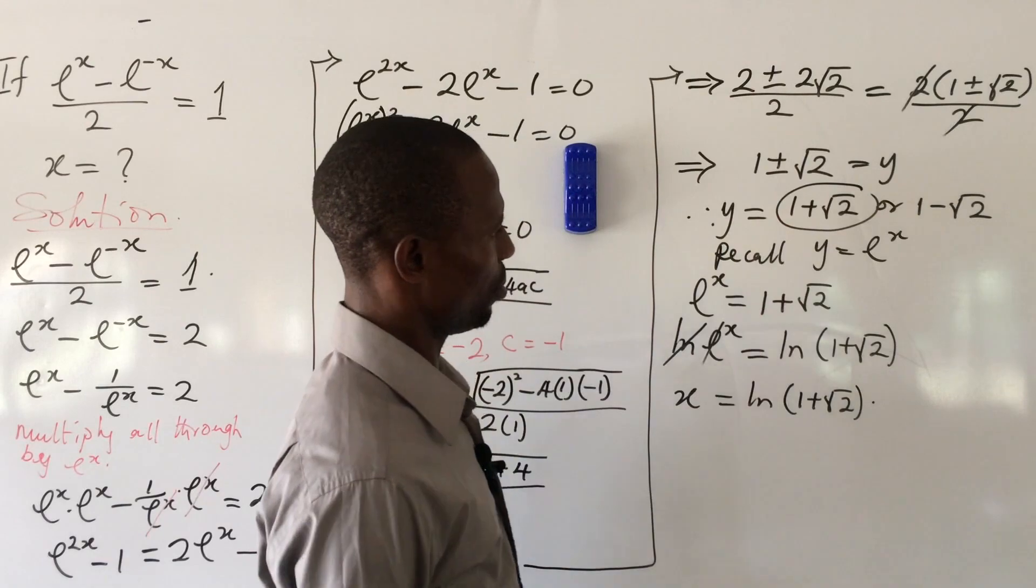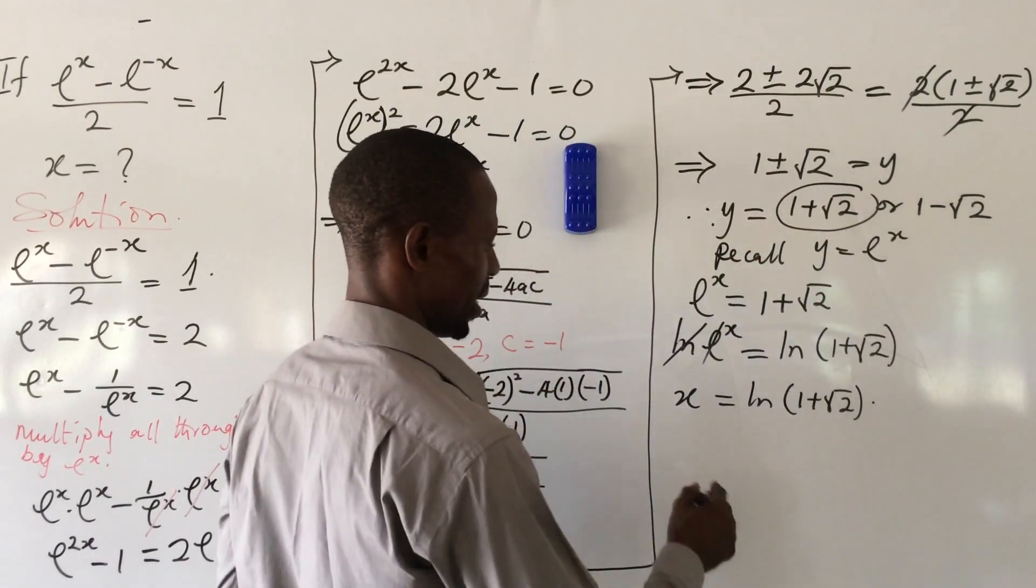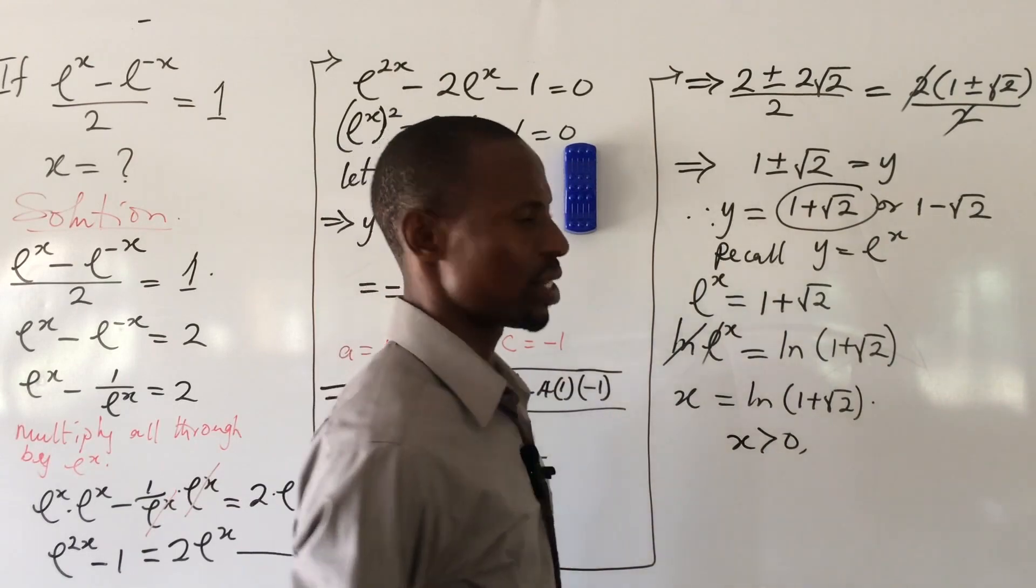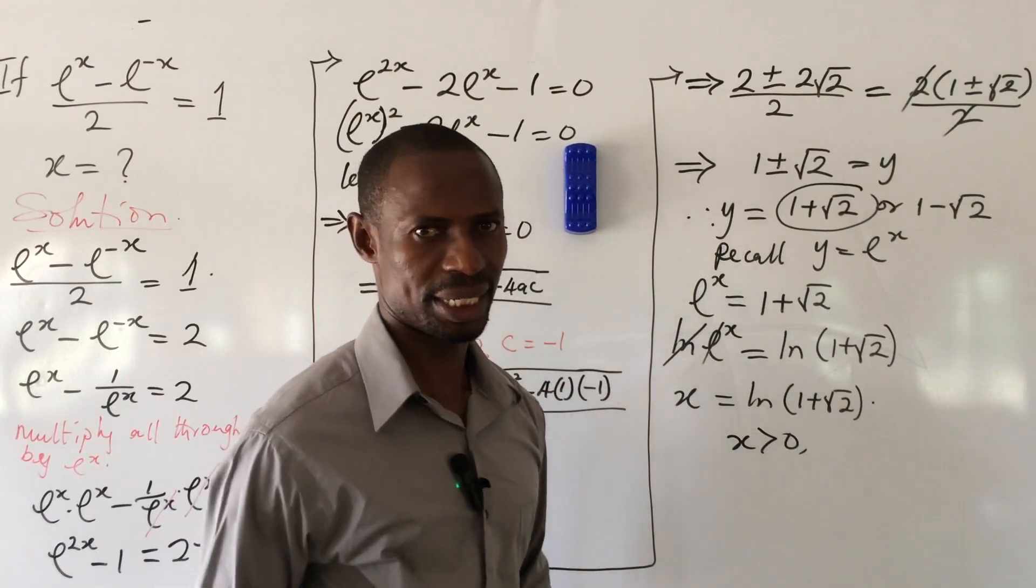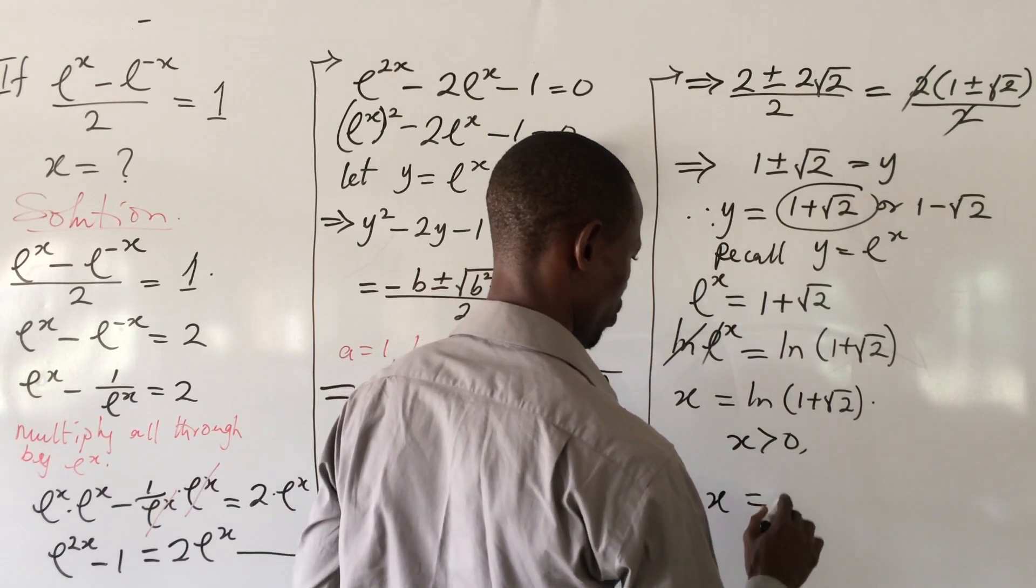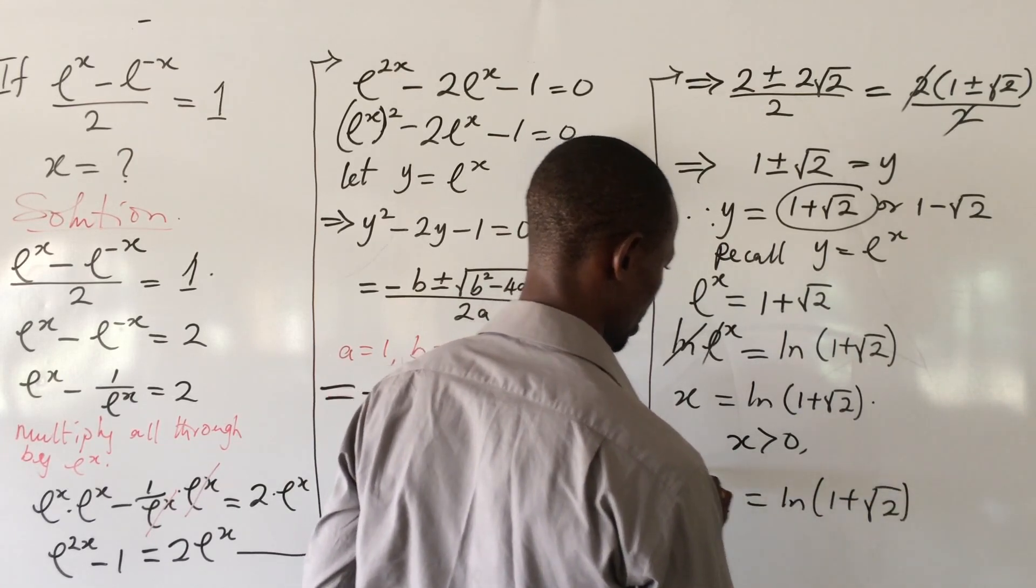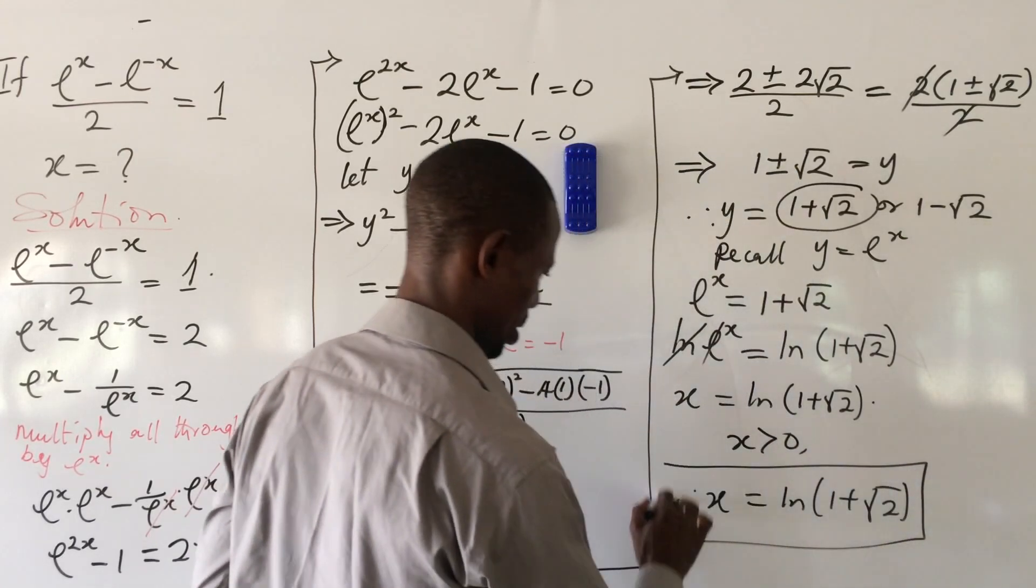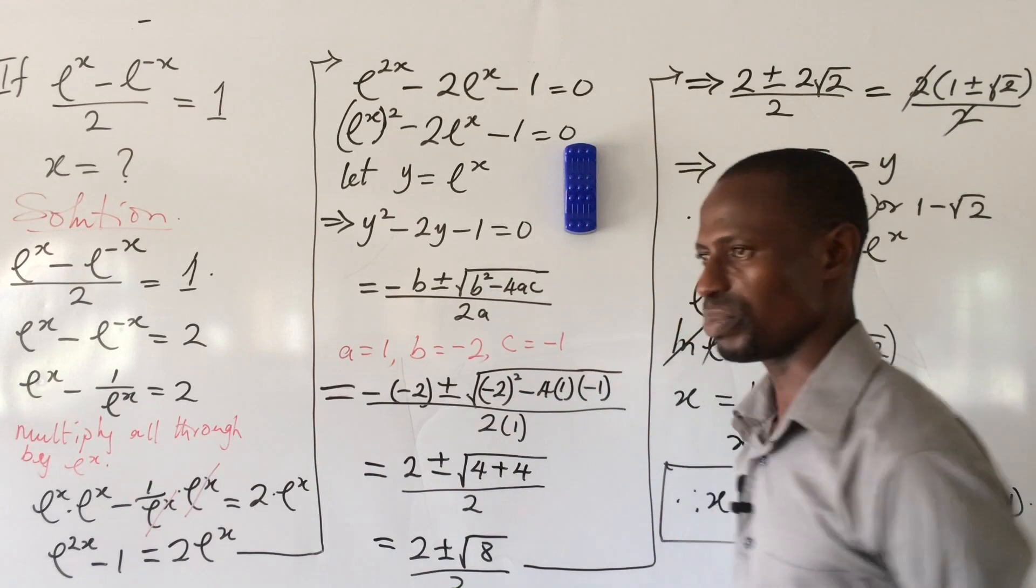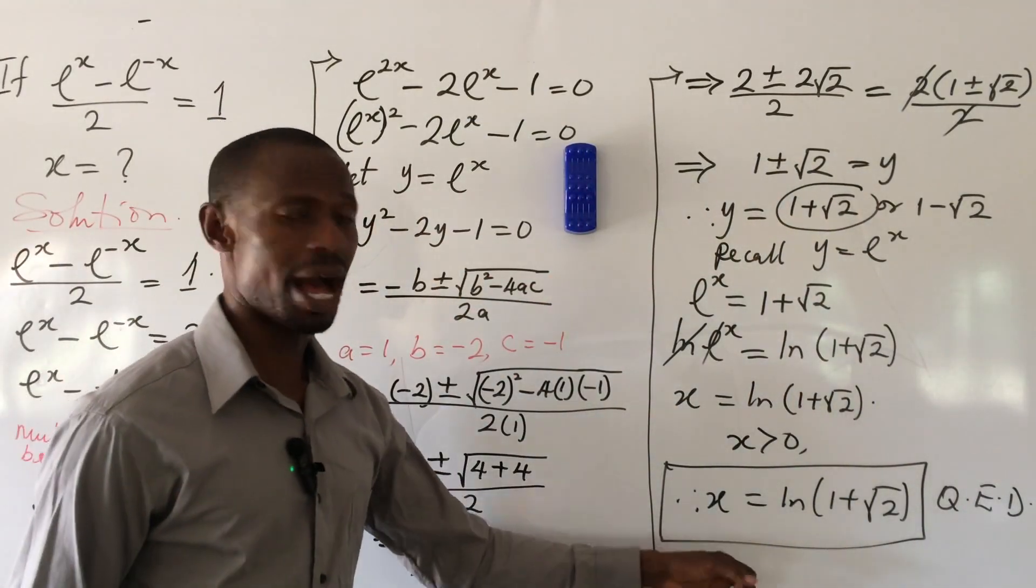Now from the value of our y, if x is greater than 0, then the second solution will not exist. Therefore, finally, our x equals ln(1 + √2). This is the solution to that exponential equation, and this is the value of our x.